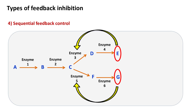Number 4: Sequential feedback control mechanism. In this type of mechanism, the end product of the pathway inhibits the enzyme at the branch point. Hence, the concentration of the intermediate at the branch point increases. As the concentration of the intermediate increases, it inhibits the first enzyme of the pathway.